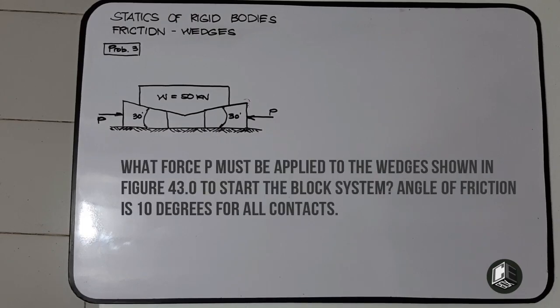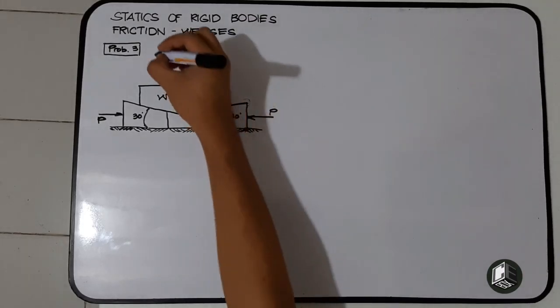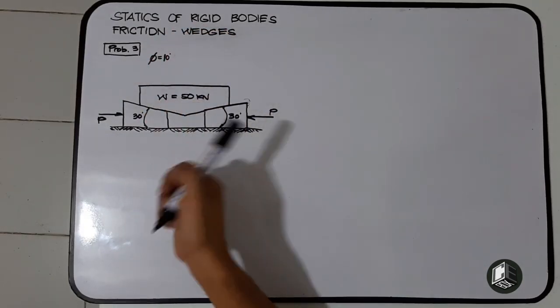This is problem number 3 for wedges. What force P must be applied to the wedges shown in figure 43.0 to start the block system? Angle of friction is equal to 10 degrees for all contacts.